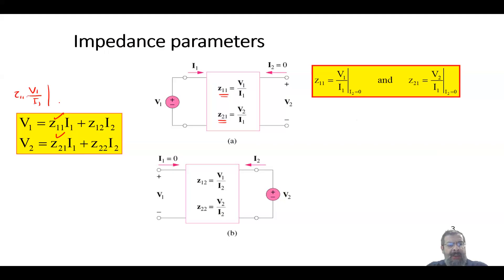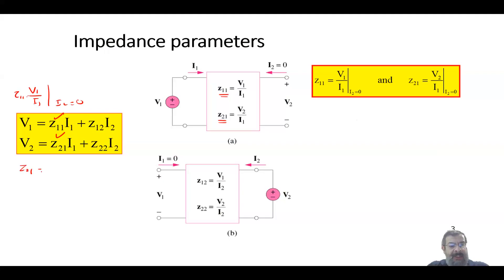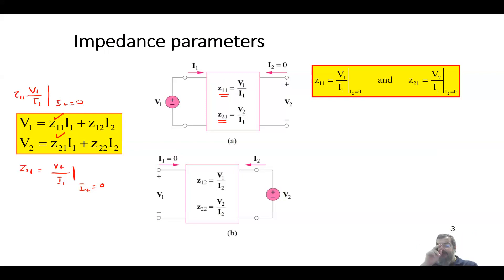Similarly, for z21, if i2 = 0, it is simply v2/i1 when i2 = 0. These two parameters come from this configuration. Then you reverse: apply the voltage from the other side and open-circuit the left side.